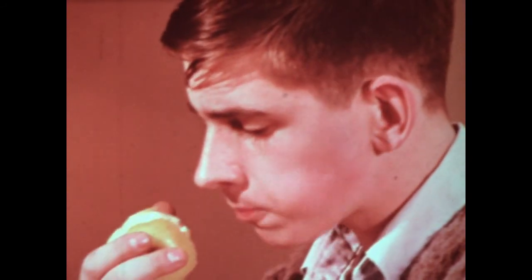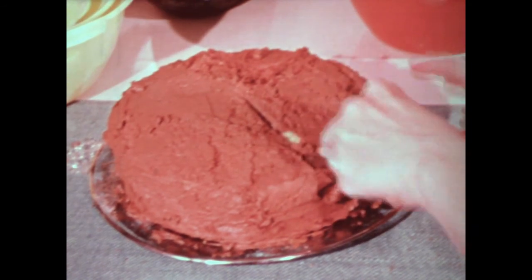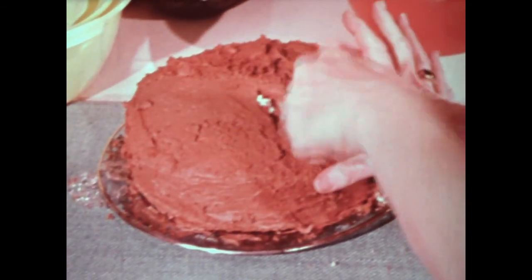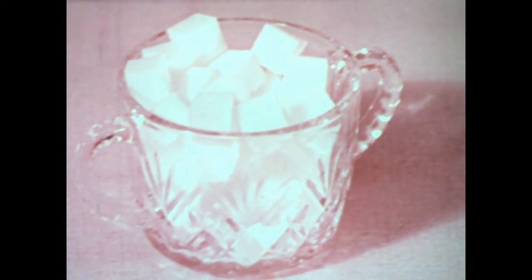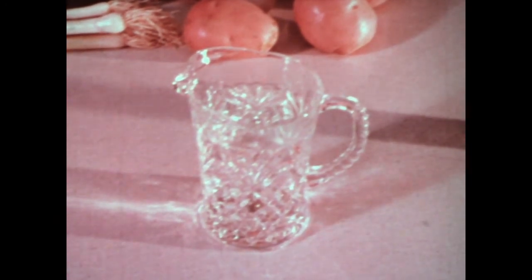The foods we eat are almost endless in their variety, taste, and appearance. But to the biochemist, there are only six major kinds of food: carbohydrates, mainly starches and sugars, proteins, fats, salts, vitamins, and water.